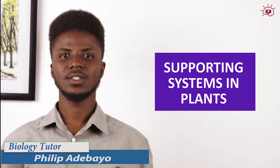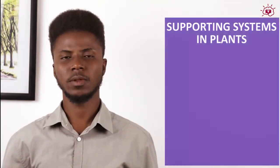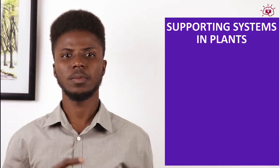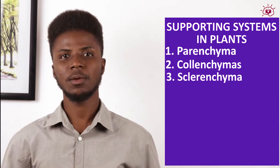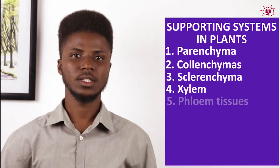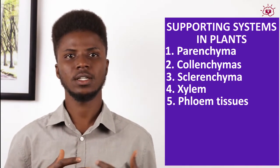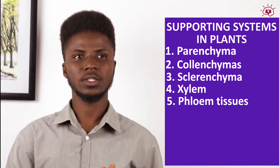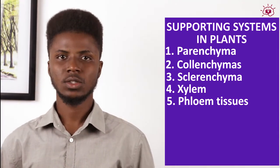We are going to be discussing supporting systems in plants. There are basically five tissues that aid in the supporting system of a plant, and they include the parenchyma, the colenchyma, the sclerenchyma, the xylem, and the phloem tissues. Each of these tissues work hand-in-hand to provide support and also perform other functions in helping the plant carry out its duties.